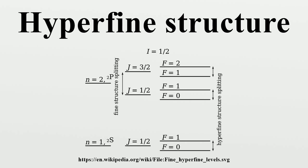In this case, we can project μ onto J, giving an expression commonly written as H_hfs = A · I · J, where A is a hyperfine structure constant determined by experiment. Since I · J = ½(F(F+1) − I(I+1) − J(J+1)), this gives a specific energy, and in this case the hyperfine interaction satisfies the Landé interval rule.